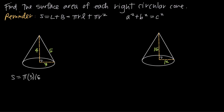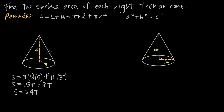The slant height is 5, so we plug that in, plus πr². So pi times r squared — the radius is 3, so we get times 3 squared. When we simplify, we get s = 15π, and then 3 squared is 9, so we get plus 9π. When we add those together, we get 24π, and that's the surface area of this cone. If you want a decimal approximation, you can use 3.14 for pi, or 22/7 for a fractional approximation. But we'll leave our answer in terms of pi.